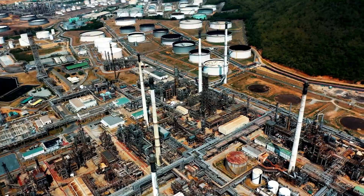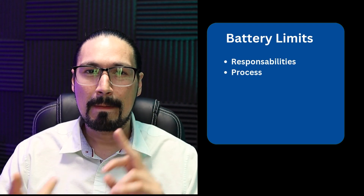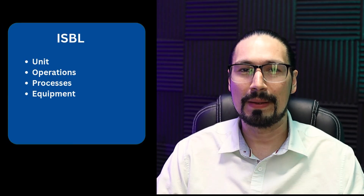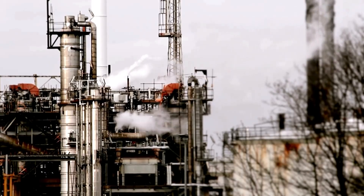The easiest one to define will be inside battery limits. As the name implies, it is going to be something which is inside a region or the lines of the chemical plant. What we're talking about is responsibilities, processes, and lines. Inside battery limits, think of this as the fundamental unit operations, processes, or equipment of your chemical plant — reactors, distillation columns, tanks, and of course pipes and valves within the battery limit.